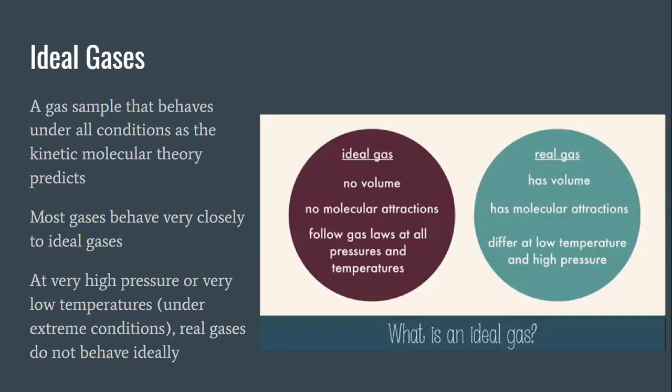And the diagram to the right shows a comparison of an ideal versus a real gas. So the ideal gases in these relationships have no volume, there's no attraction between the particles, and they follow all gas laws or they follow the gas laws at all pressures and temperatures. But a real gas truly does have volume and it truly does have molecular attractions. Those particles are attracted to one another. But they only differ in their behavior at those low temperatures and high pressures.